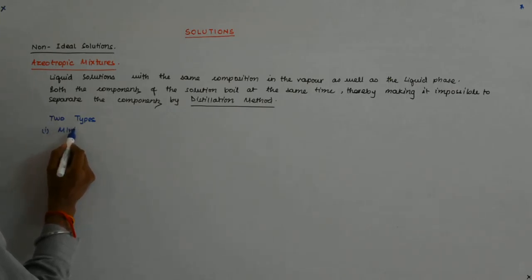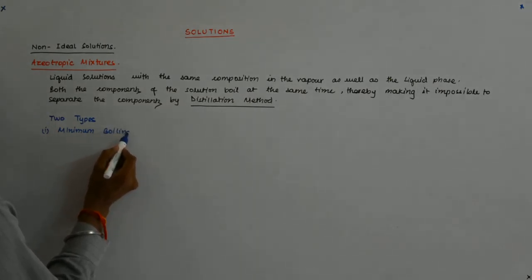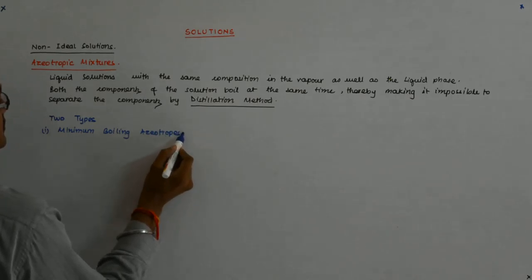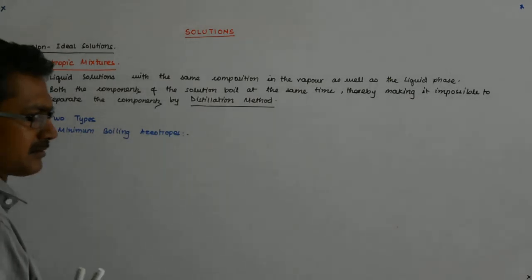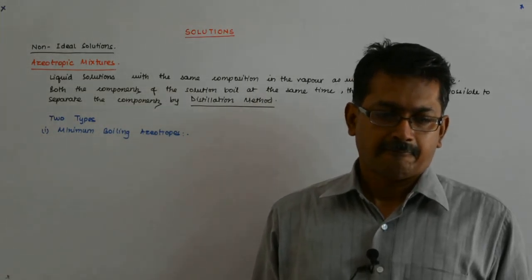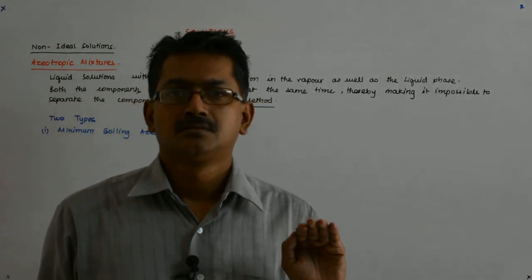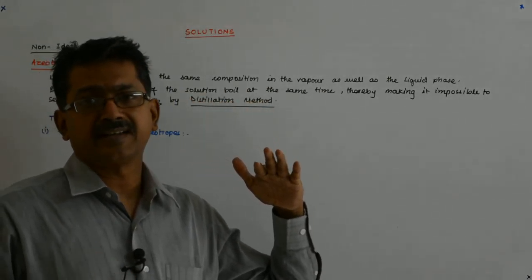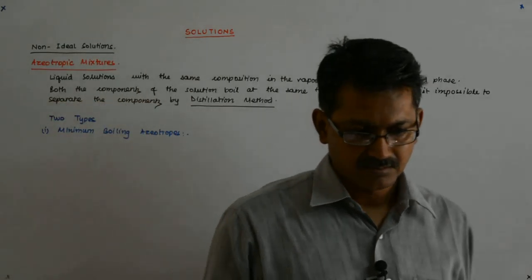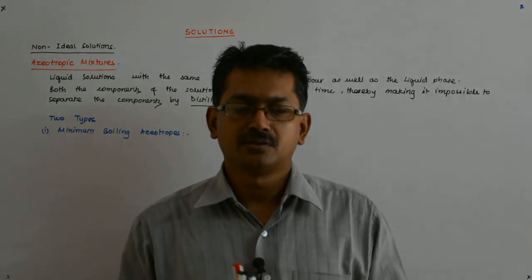Azeotropic mixtures are of two types. The first type is the minimum boiling azeotropes. This is not something you should try to memorize — just try to understand what minimum boiling means.